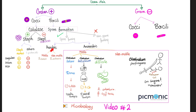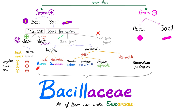Gram-positive spore-forming rods are divided into aerobic and anaerobic, each subdivided into motile and non-motile. The motile aerobic is Bacillus cereus. Non-motile aerobic is Bacillus anthracis. The anaerobic spore-forming are the Clostridia: the motile ones are Clostridium tetani, Clostridium botulinum, and Clostridium difficile. The non-motile is Clostridium perfringens. Collectively, all of these are known as Bacillaceae, and all of them make endospores.